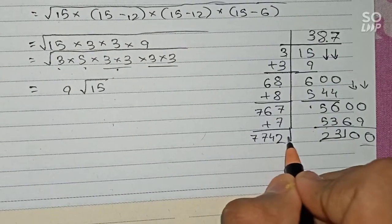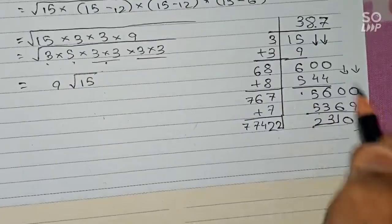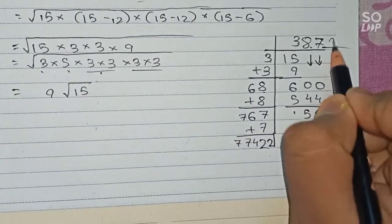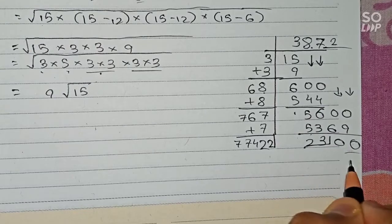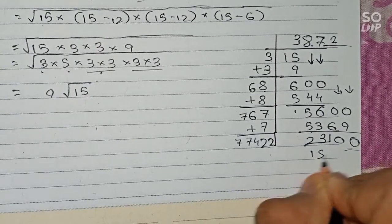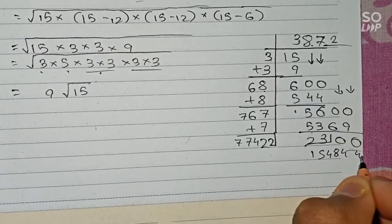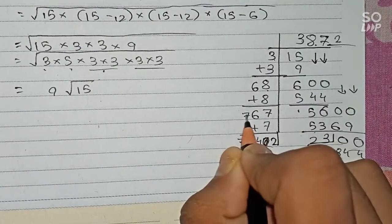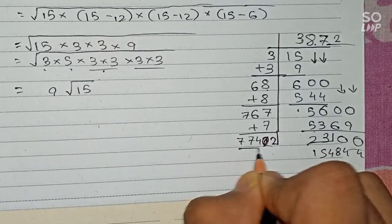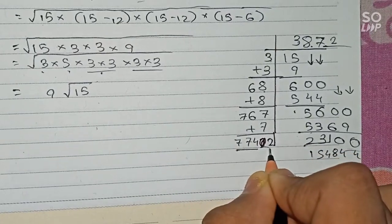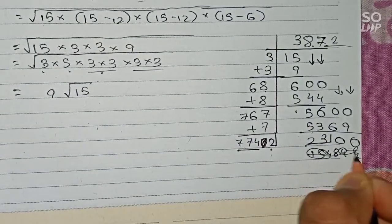So 7742, if 2 goes... Oh sorry sorry. Here 767 plus 7, that is 774, and here if 2 divides, it will not become this.